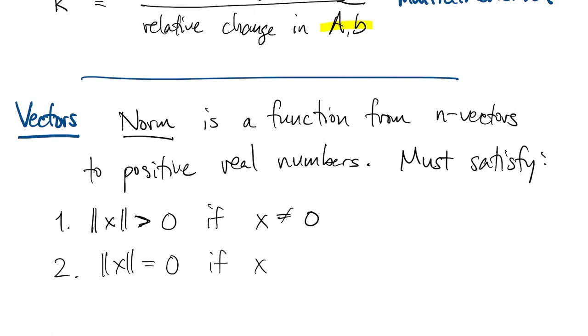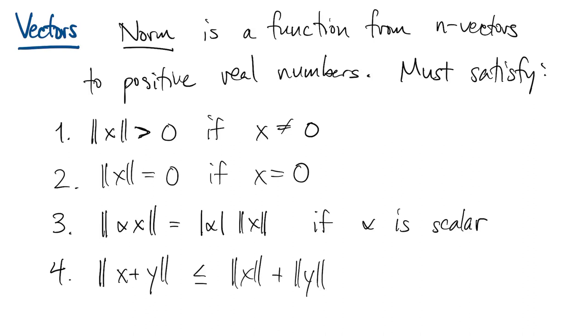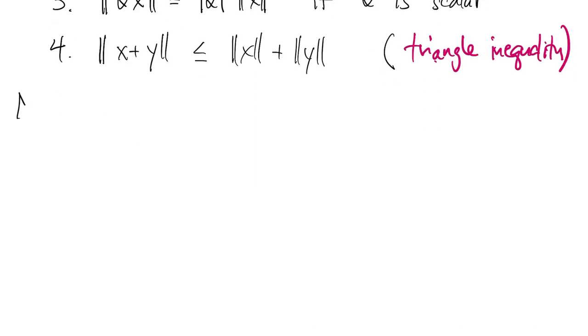Third, if we multiply a vector by a scalar, then we scale the norm by the magnitude of that scalar. And fourth, we have that the norm of x plus y is always less than or equal to the norm of x plus the norm of y. This is called the triangle inequality because it amounts to saying the shortest distance between two points is a straight line.